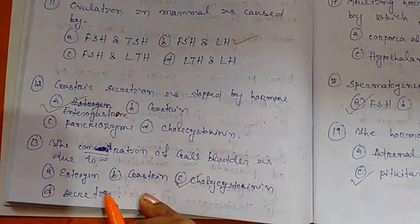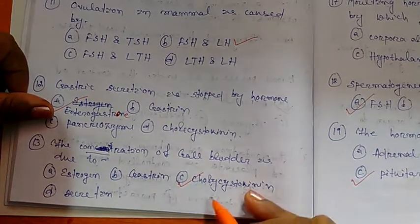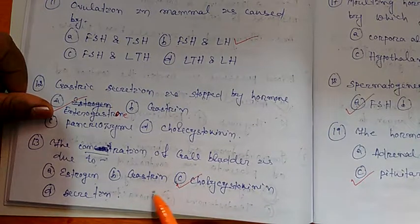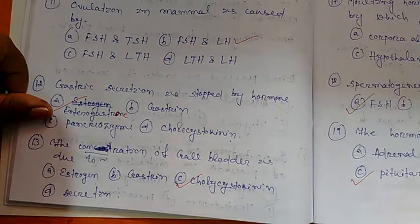Option A is estrogen, B is gastrin, C is cholecystokinin, and D is secretin. So right option is cholecystokinin.